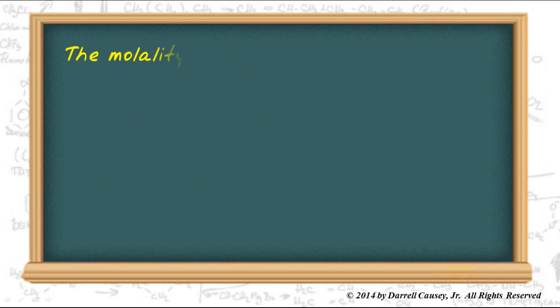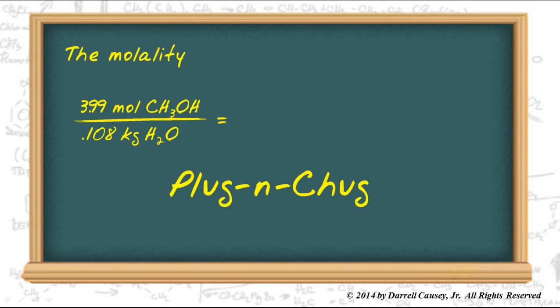Now let's calculate the molality. Take the moles of methanol, divide it by the kilograms of water, plug and chug again, and you'll get 36.9 molality.